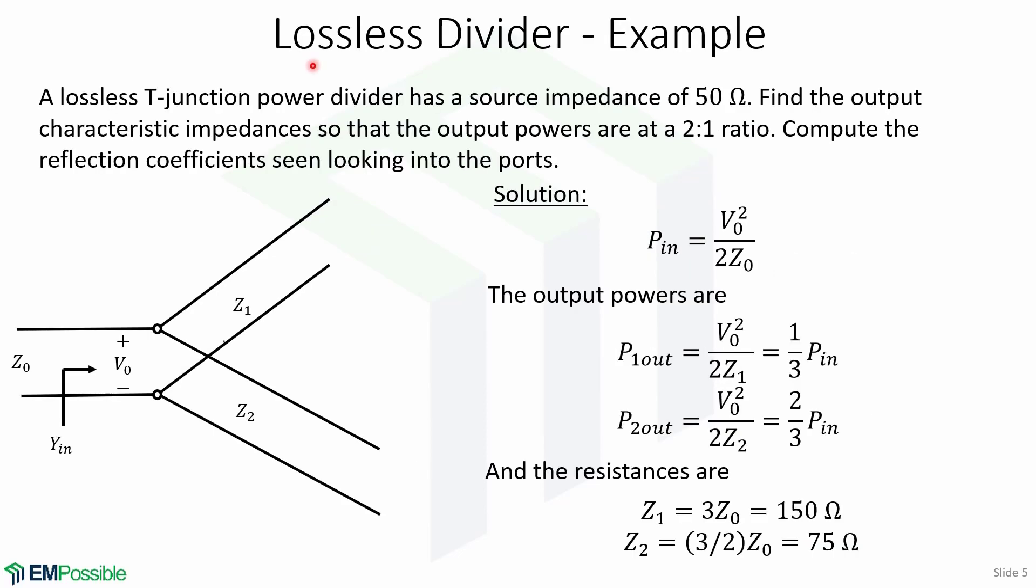Let's look at an example of a lossless divider. A lossless T-junction power divider has a source impedance of 50 ohms. Find the output characteristic impedances so that the output powers are at a 2 to 1 ratio. Compute the reflection coefficients seen looking into the ports.